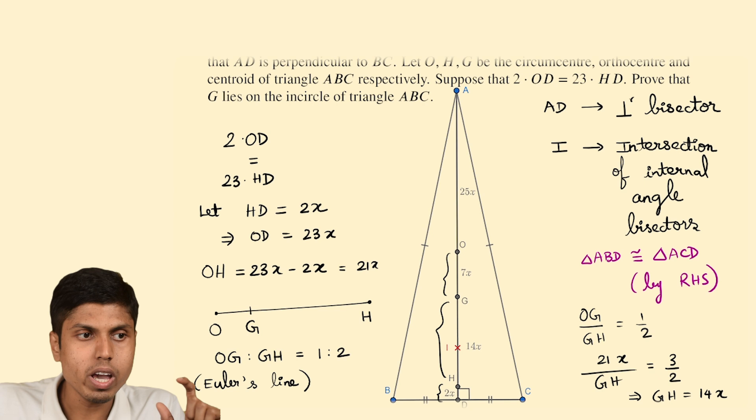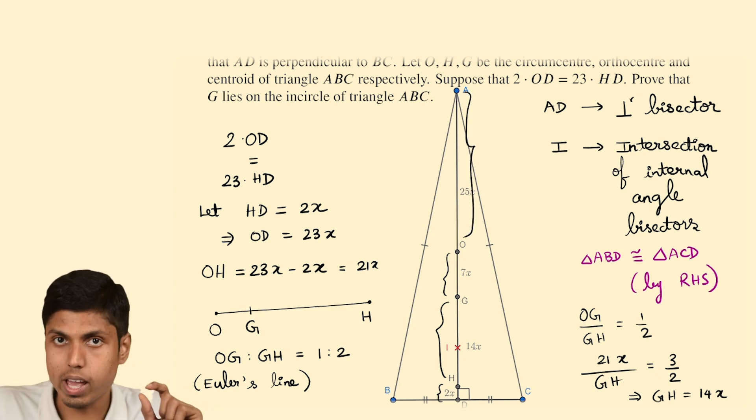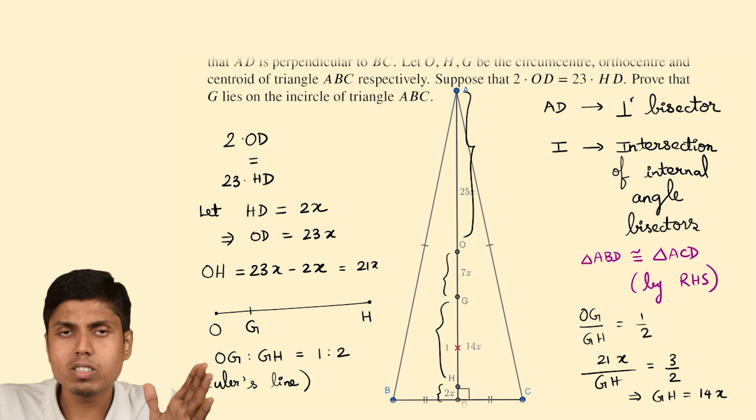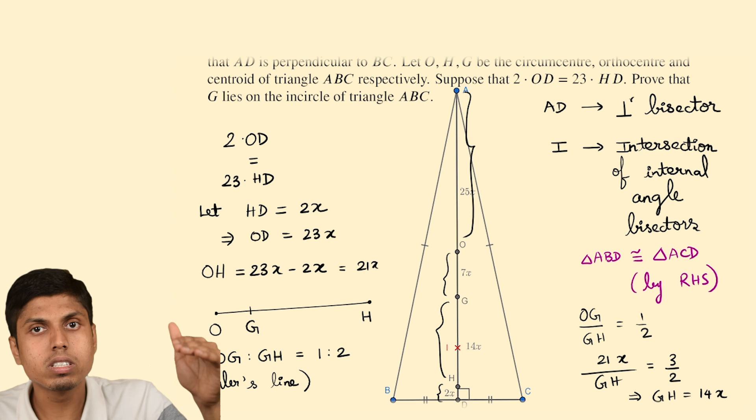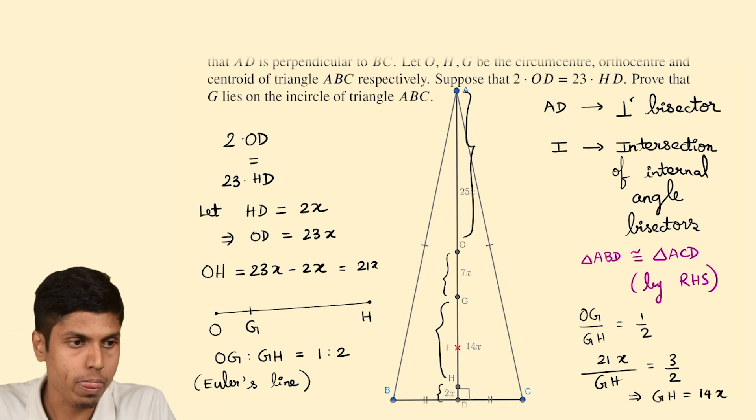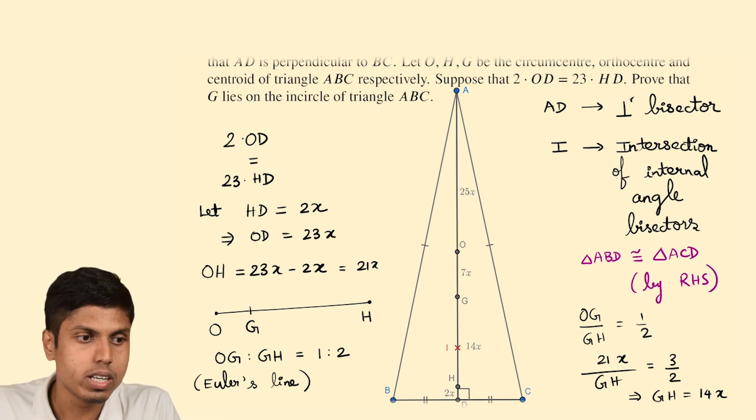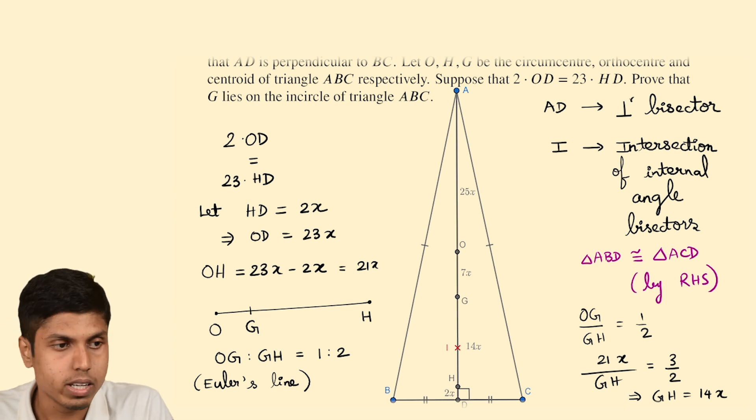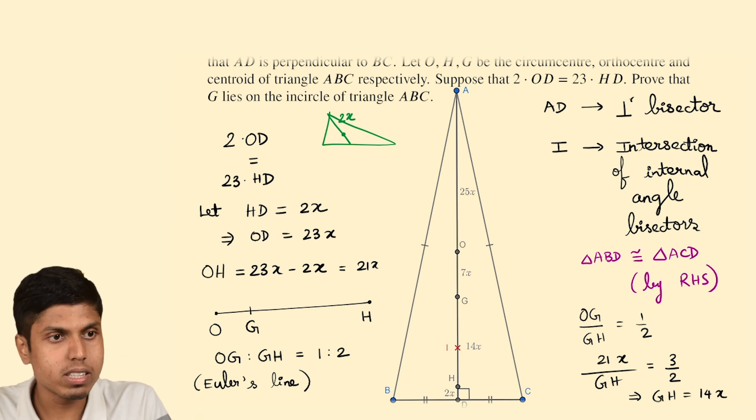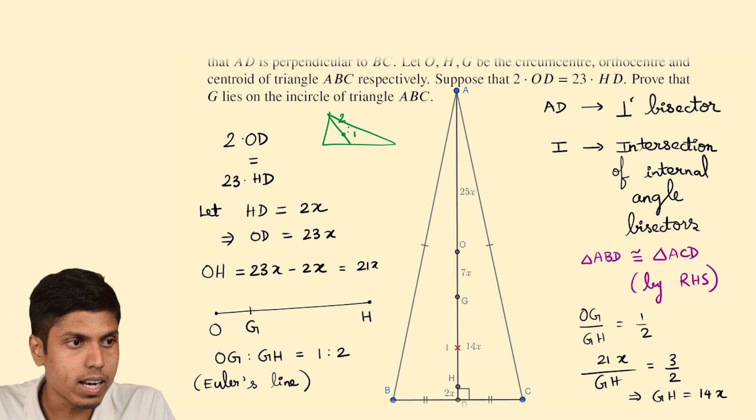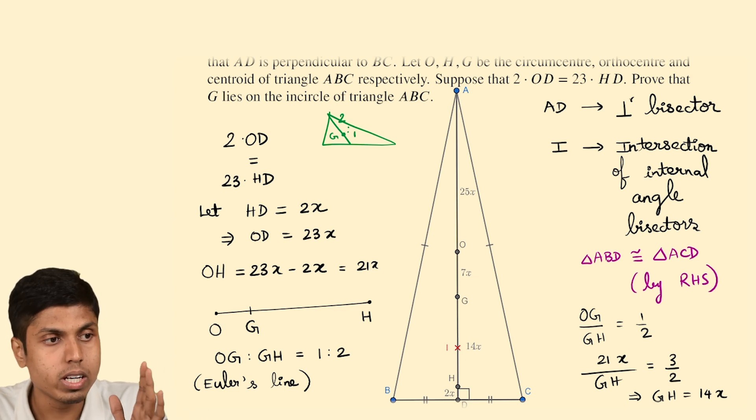Now the question will be how far is the vertex of this isosceles triangle from these points? At least one point, if we are able to figure out the distance from at least one of these, then I can figure out the distance from all of these. And here is where we will invoke the centroid division ratio of the median. Centroid G divides the median in the ratio 2 is to 1. From the vertex to the opposite side, it divides in the ratio 2 is to 1. And this is true for any triangle, not only for isosceles. For any even scalene triangles, centroid divides the median in the ratio 2 is to 1.